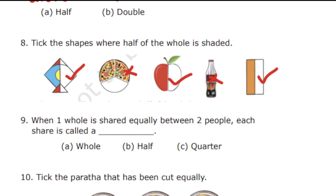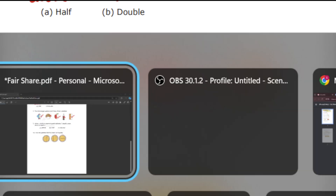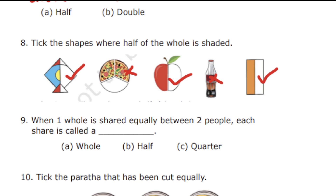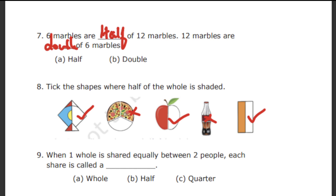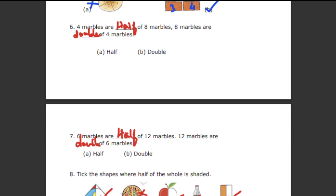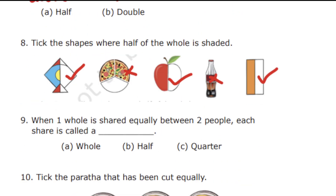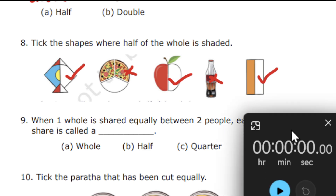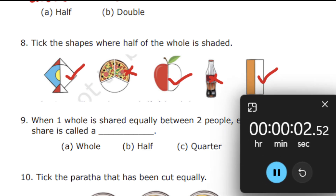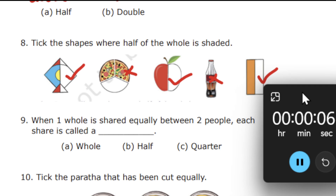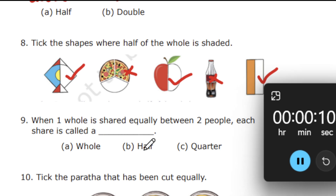Question 9: when one whole is shared equally between two people, each share is called dash. I believe this is a very easy question everyone can answer. The options are whole, half, and quarter.